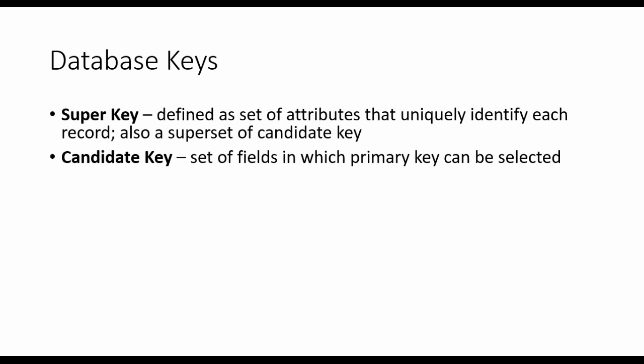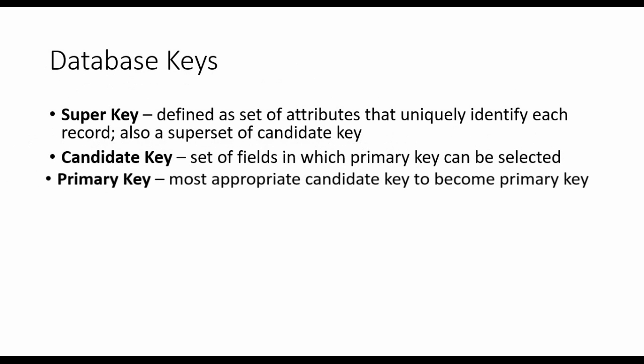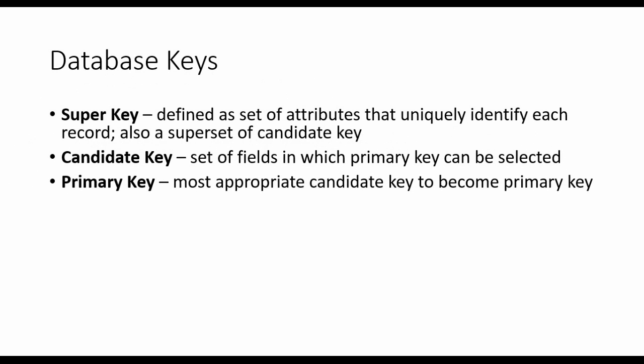Since super key is a superset of candidate key, what does a candidate key mean? A candidate key is nothing but a set of fields from which a primary key can be selected. For example, an ID, email, or a mobile number — these are the set of attributes from which a primary key can be selected.